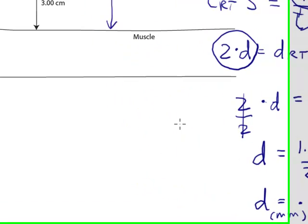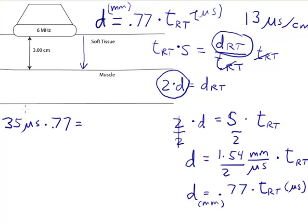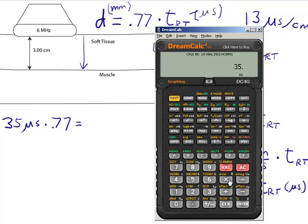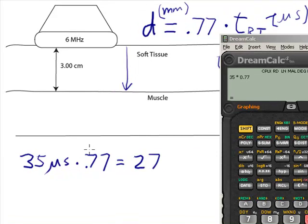So let's look at an example of this. Let's say that I have a signal that returns 35 microseconds after it was emitted from the transducer. All I have to do is multiply by 0.77 and I can figure out the distance away that the reflection was. So 35 times 0.77 equals 27.